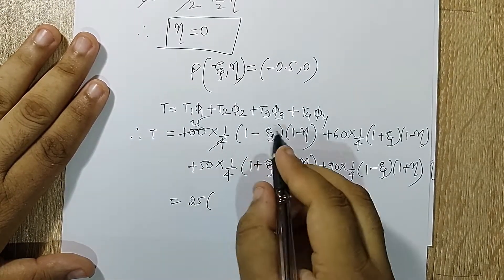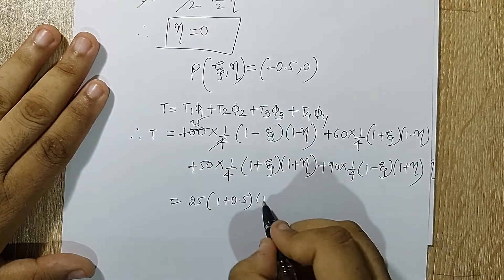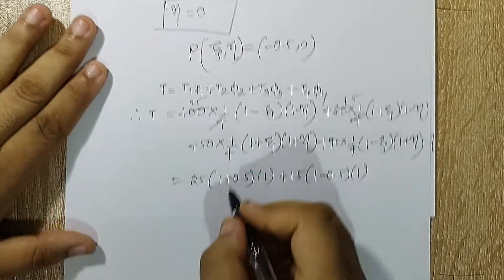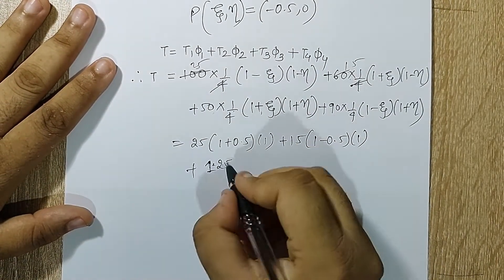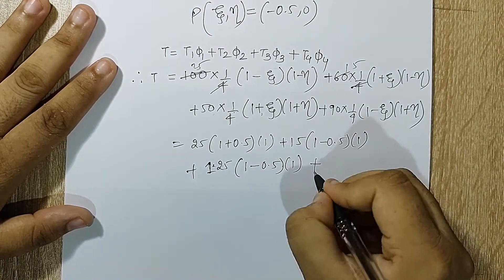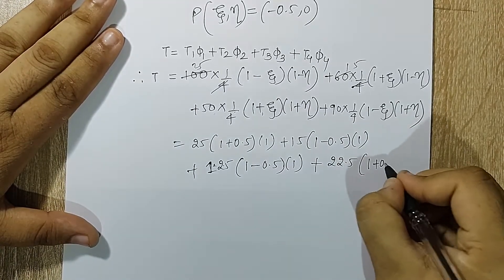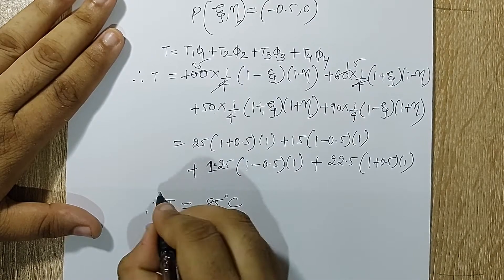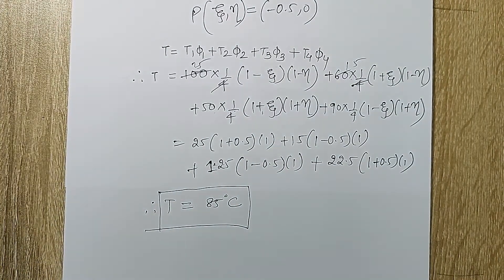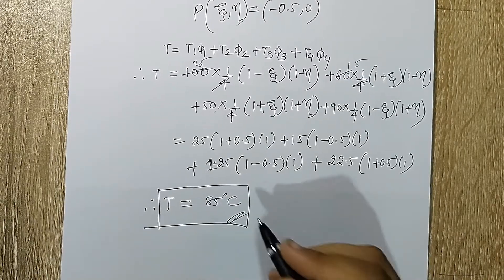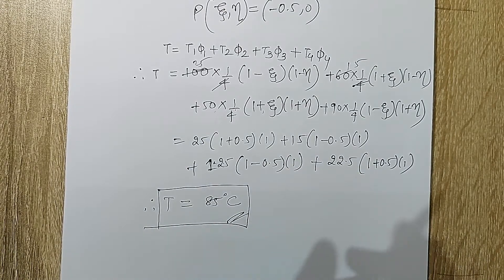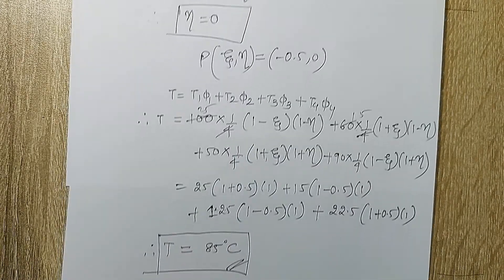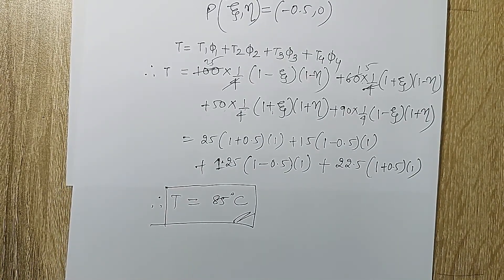Substituting ζ = −0.5 and η = 0: the terms become 25·(1+0.5)·1 + 15·(1−0.5)·1 + 12.5·(1−0.5)·1 + 22.5·(1+0.5)·1. Solving this gives the answer as 85°C. If you recollect, by using the rectangular coordinate system method I got the same answer. So whether you solve using natural coordinate system or rectangular coordinate system, you get the same answer. This process becomes a little lengthier because you have to calculate zeta and eta. I hope you have understood the numerical. With this I end the session. I'll see you in the next session. Thank you.